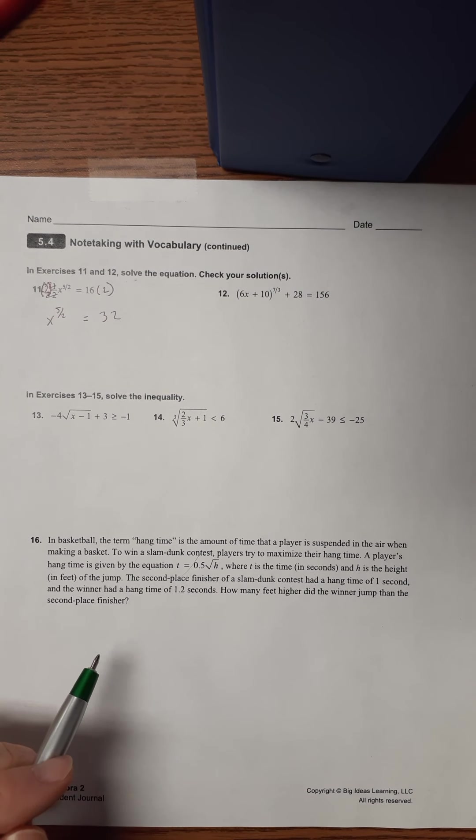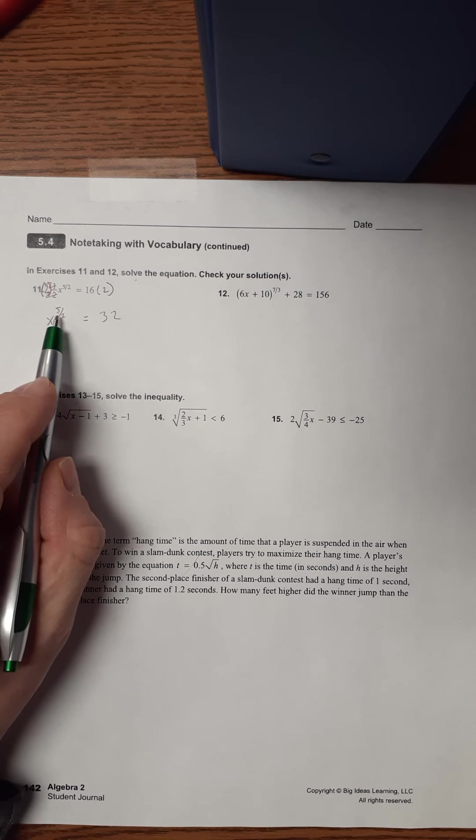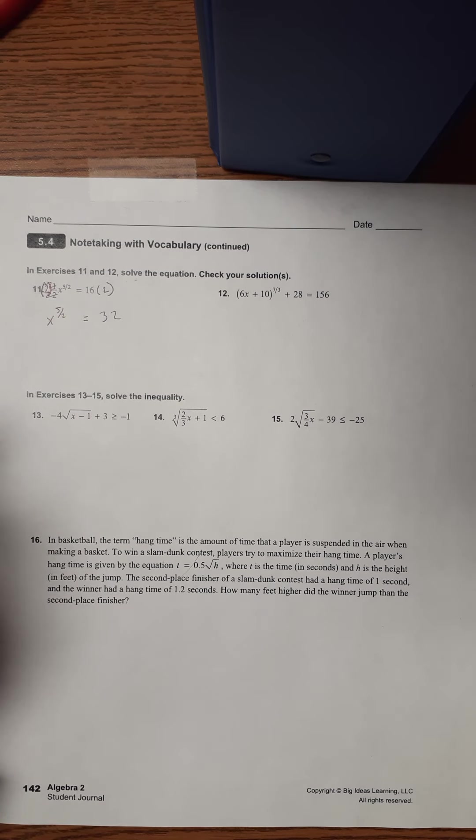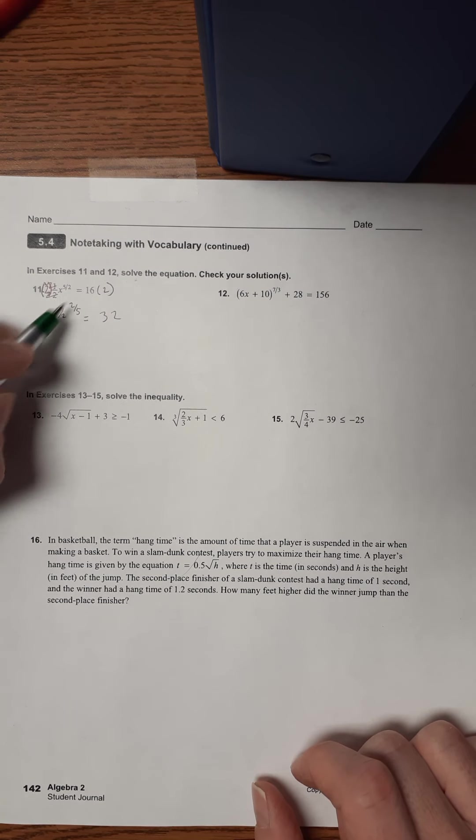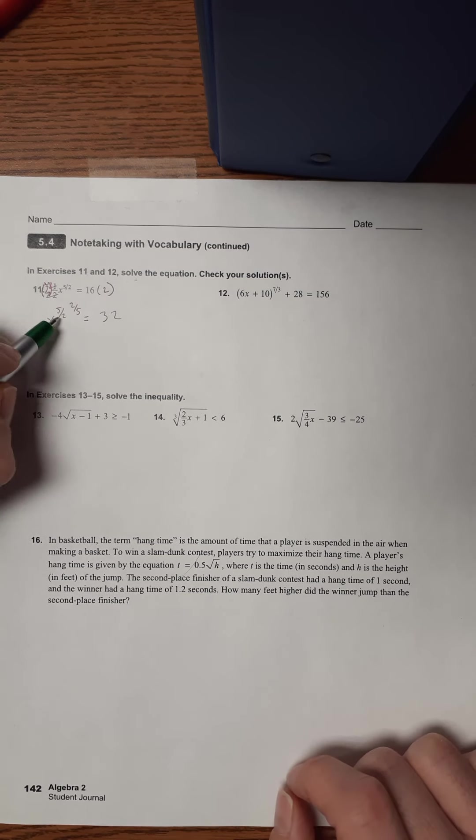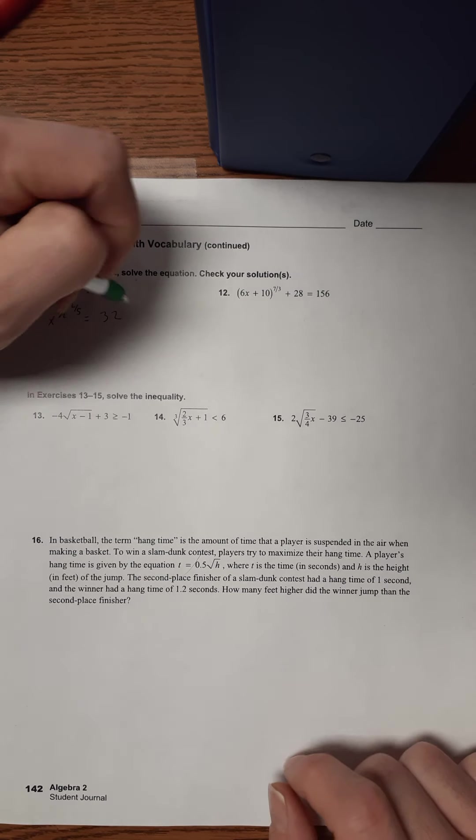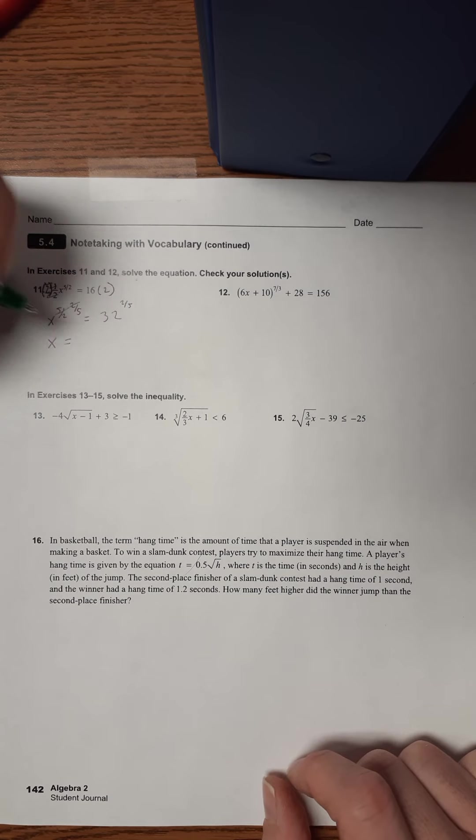So what is the opposite? How do you get rid of something being raised to the 5 halves power? So the way you would do that is you would raise this to the 2 fifths. I just took the reciprocal of it because if you multiply by a reciprocal that gets you to 1. So that would be just X, X to the first. So I'm gonna raise this to the 2 fifth power. I'll do this as well. So these will cancel out and I just get X over here.